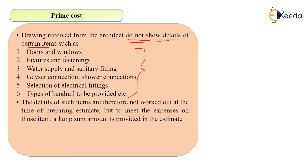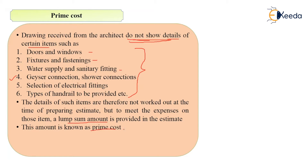Examples of Prime Cost items include: the type of doors and windows to be used — not mentioned in the architectural drawing; fixtures and fastenings to fix doors and windows; water supply and sanitary fittings with their specifications; whether to provide a geyser connection or not; and how many shower connections are to be provided. All these details are generally not shown on architectural drawings, so a lump sum amount is provided in the estimate — that is your Prime Cost.